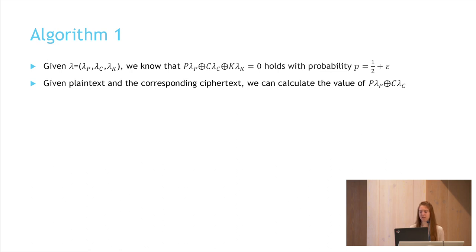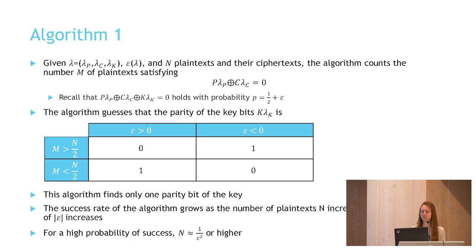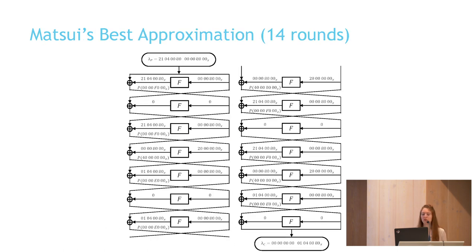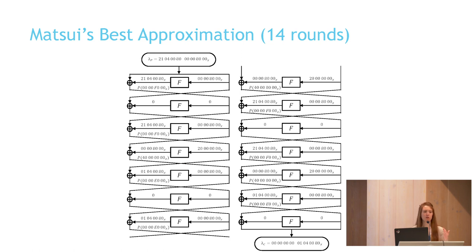Algorithm one finds the parity bits of the key involved in the approximation. Given that the approximation holds with probability one-half plus epsilon and N plaintexts and their corresponding ciphertexts, the algorithm counts the number M of plaintexts satisfying P_lambda_P XOR C_lambda_C equal to zero, then guesses the parity of the key bits. If epsilon is greater than zero and M is greater than N/2, the algorithm guesses the parity of the key bits is zero. The amount of plaintext required is proportional to one over the bias squared.